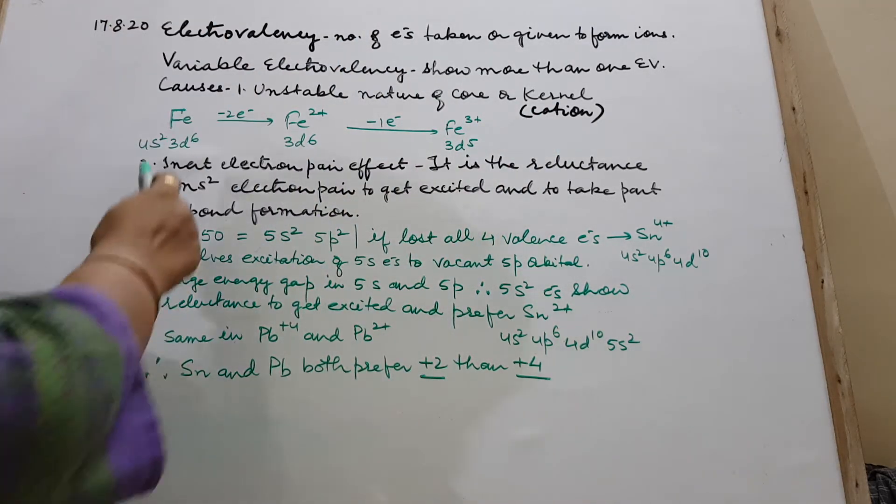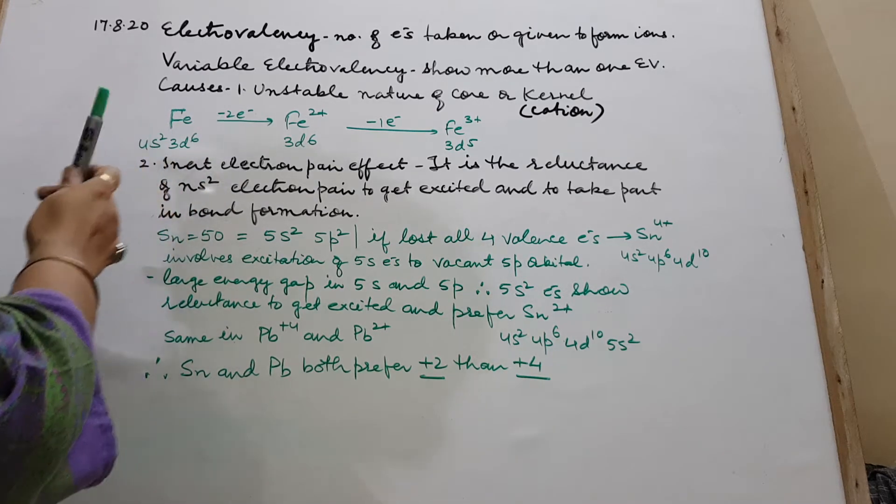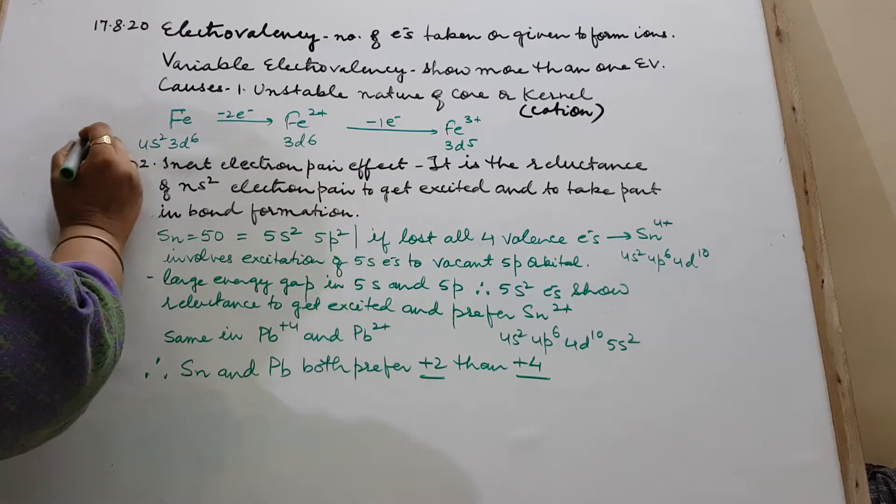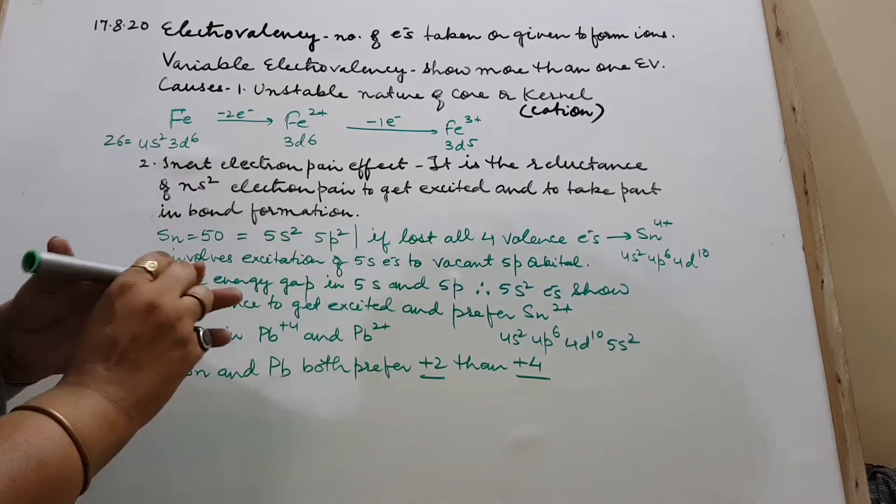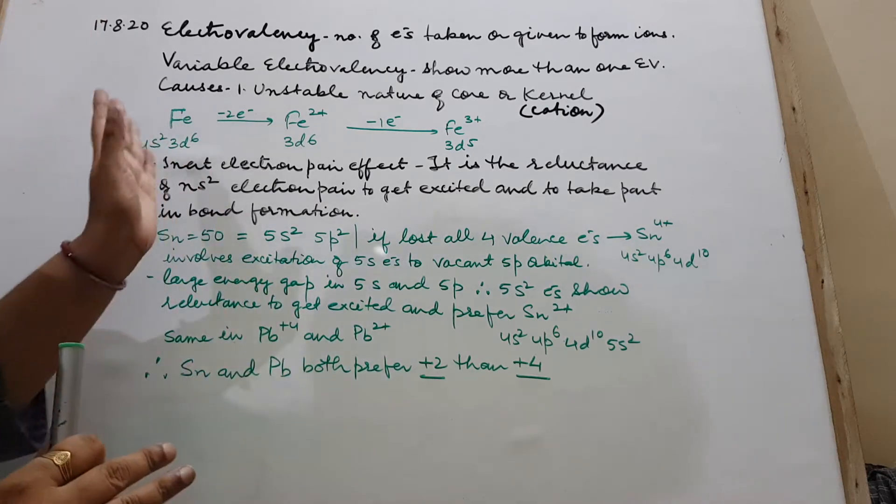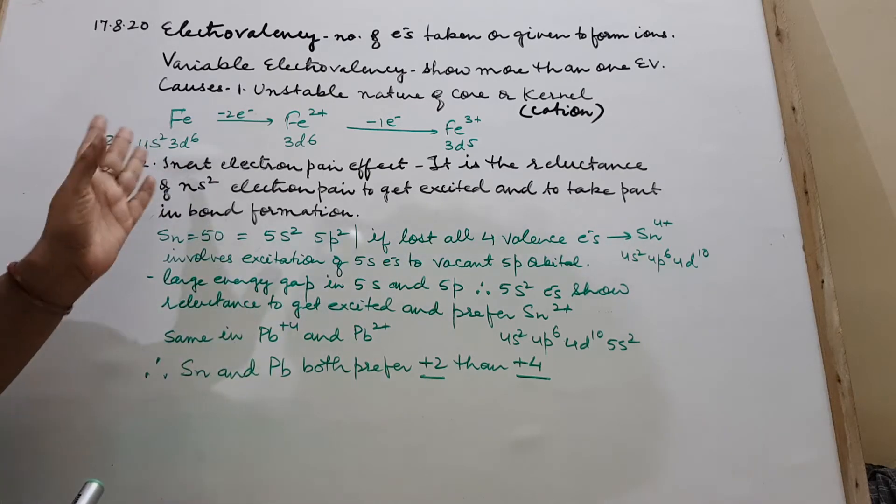Take one example of iron. Iron is atomic number 26. 26 means 4s2, 3d6. 4s2 means 20 and remaining will go in d. So accordingly 26, it is 3d6.